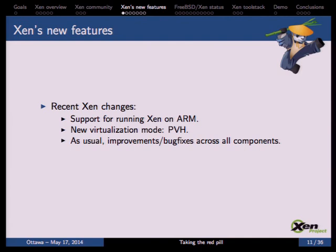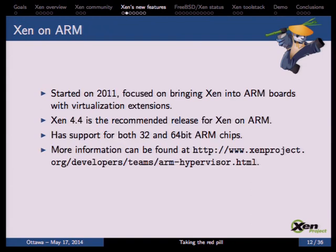Recent Xen changes mainly include support for running on ARM boards with virtualization extensions, a new mode called PVH which we'll see in more detail in the following slides, and as usual a bunch of bug fixes and improvements across all components. Xen on ARM started in 2011 and was focused on bringing Xen to ARM boards with virtualization extensions. A prior project targeting normal ARM boards without virtualization extensions was never merged back into the Xen source tree and was abandoned.